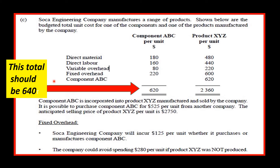First, we should note that the total there should be 640, not 620 as shown. The Suka Engineering Company manufactures a range of products. Shown below are the projected total unit costs for one of the components and one of the products manufactured by the company. This company is making a component and then using it in product XYZ.